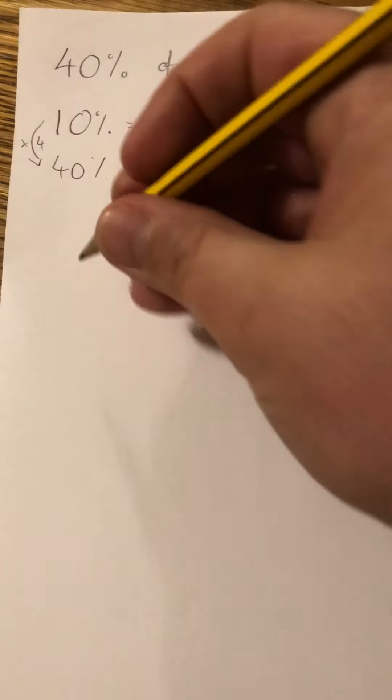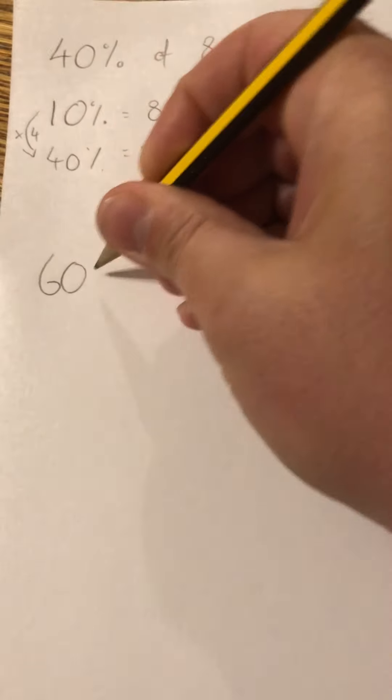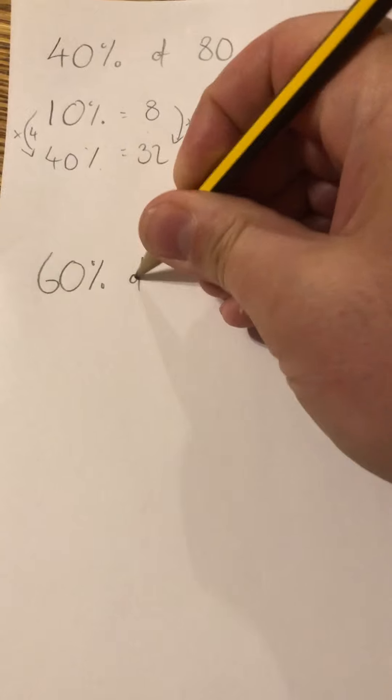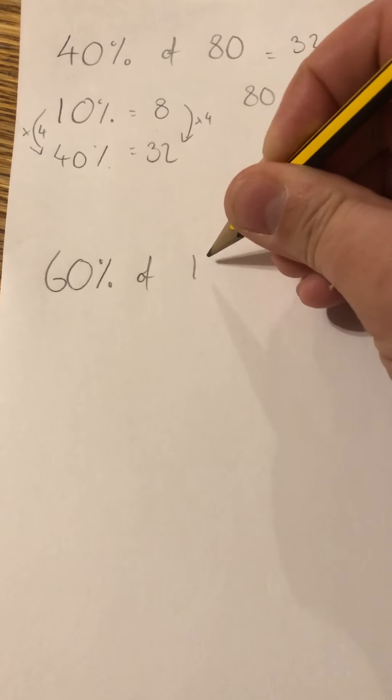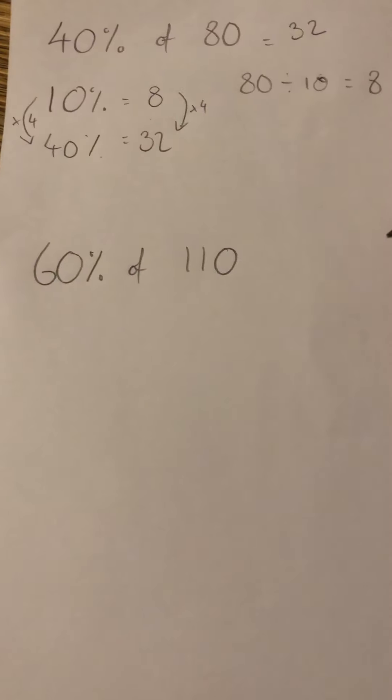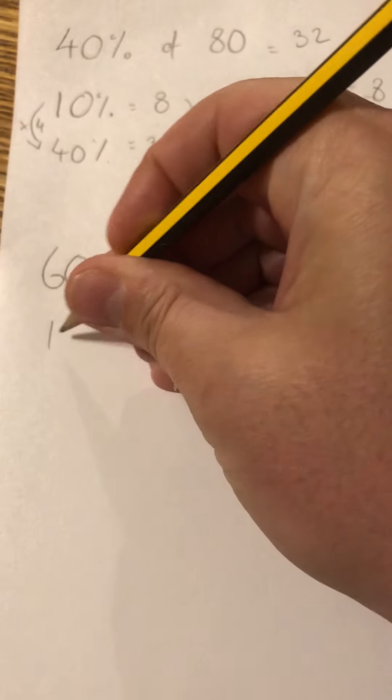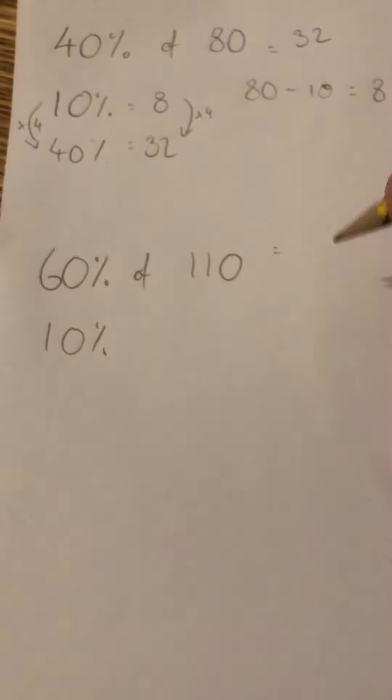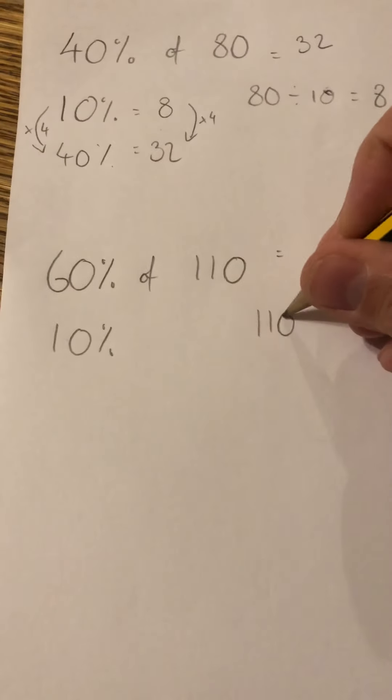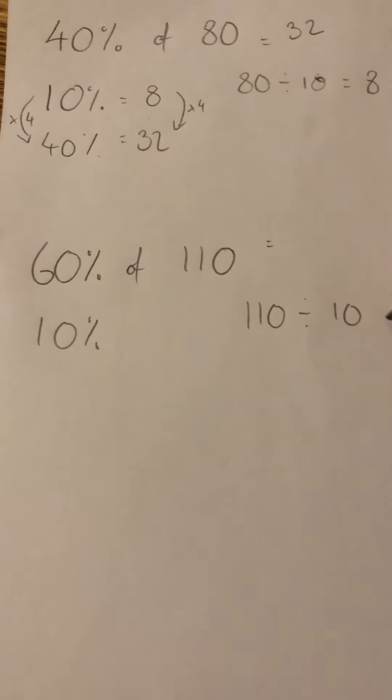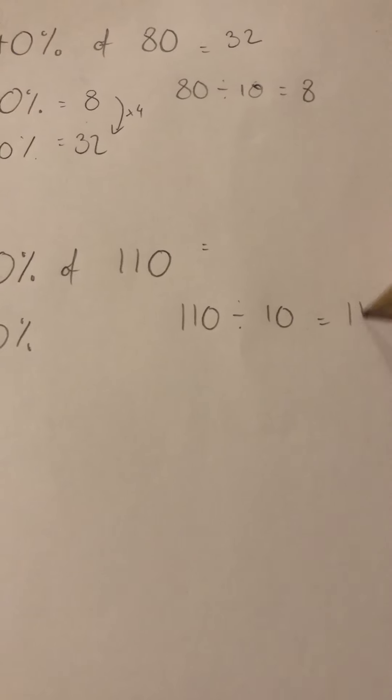I could go up to 60% if I want. Let's do 60% of 110. First of all, I find 10%: 110 divided by 10, which is 11. So 10% is 11.